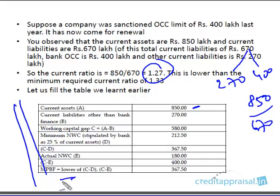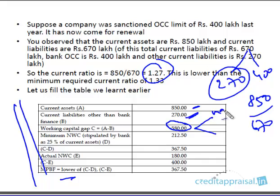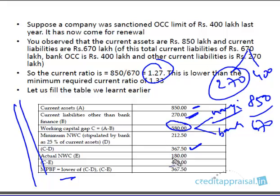How do you calculate MPBF as per the second method of lending? You take current assets of 850, less other current liabilities of 270 (excluding bank finance), to arrive at the working capital gap of 580. This working capital gap must be shared between the borrower's long-term funds and the bank. The minimum margin is 25% of current assets — 25% of 850 is 212.5. So the balance the bank should sanction as CC limit is 367.5. We also calculate the actual NWC, which in this case is 180. Working capital gap minus actual NWC gives 400. The lower of these two — 367.5 — is the MPBF: the maximum permissible bank finance.